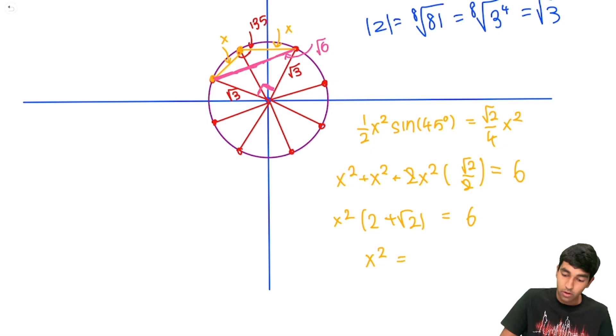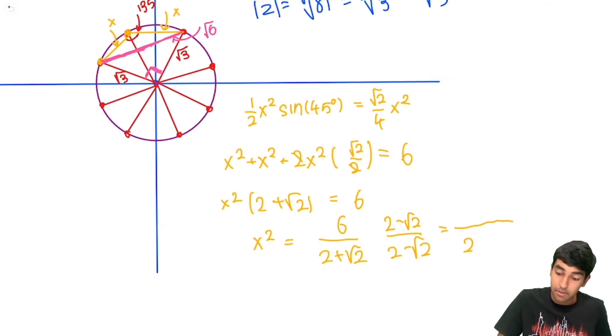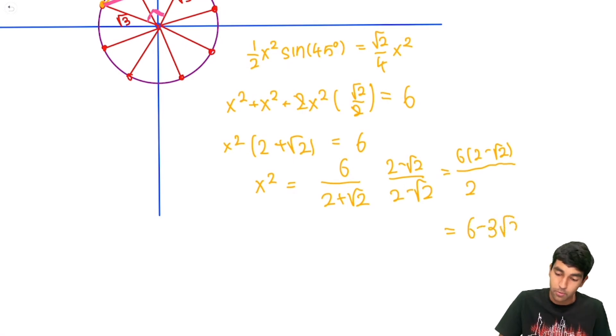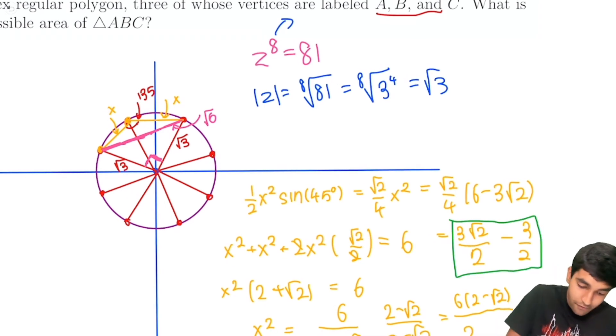And notice the smart trick we use here. We don't actually have to find x because we only need x squared. So that was simplification to keep in mind. And now we just multiply our standard rationalization process. That becomes 2. This becomes 6 times 2 minus root 2. And this simplifies to 3 times 2 minus root 2, which is 6 minus 3 root 2. So we have root 2 over 4 times 6 minus 3 root 2. And we can simplify this further. We get 3 root 2 over 2 minus 3 halves. So then this is going to be our final answer. That is the area of our triangle over here.